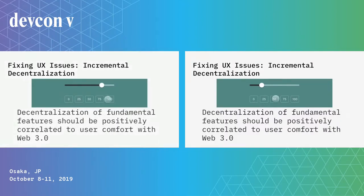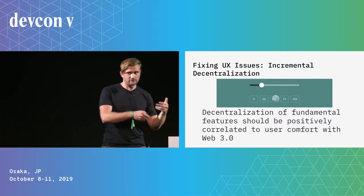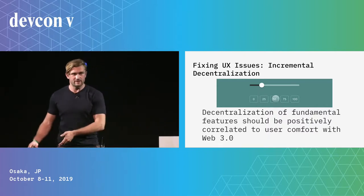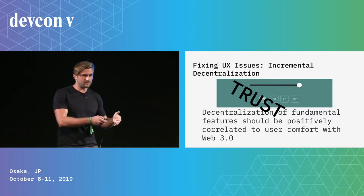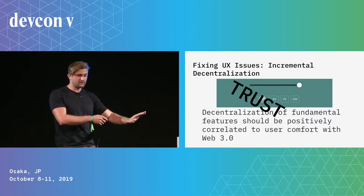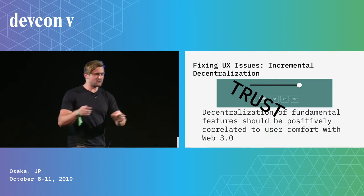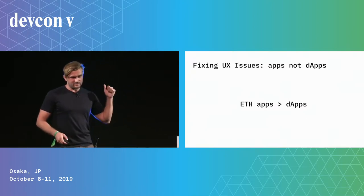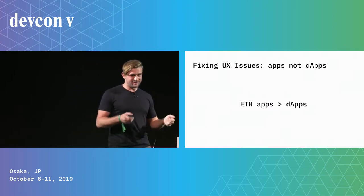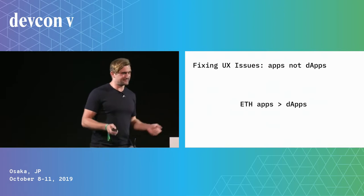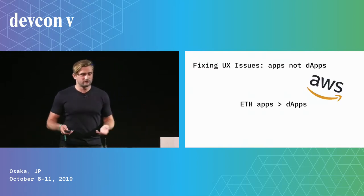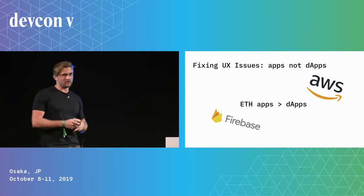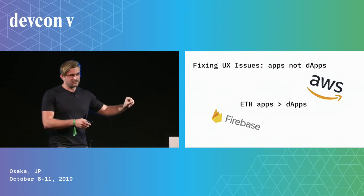This comes down to incremental decentralization — we want a soft landing pad for users to come into the ecosystem and understand what's going on before throwing them in the deep end. That means providing a layer of trust, onboarding them into something familiar while giving full access to their funds, without showing them a completely new system at the beginning. Full-stack decentralized apps have a very small chance of succeeding in the near term — it's more about hybrid solutions using AWS and Firebase alongside Ethereum.